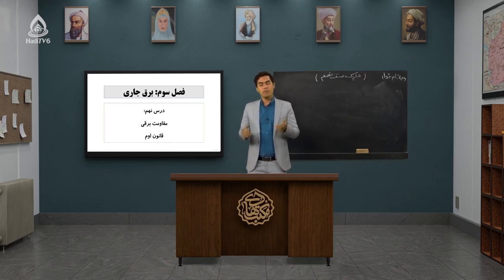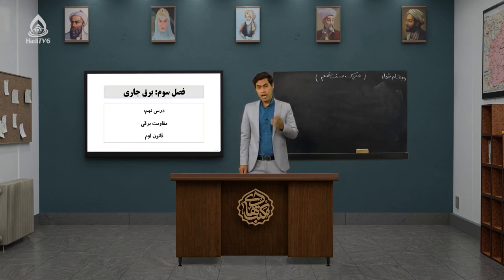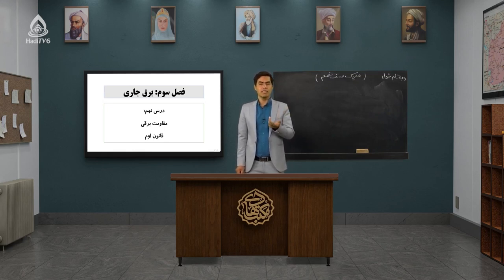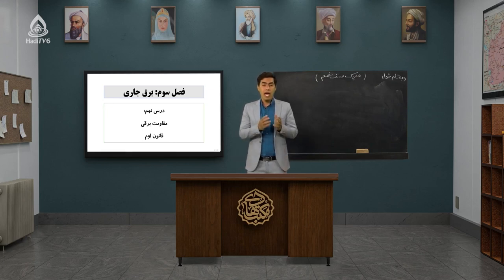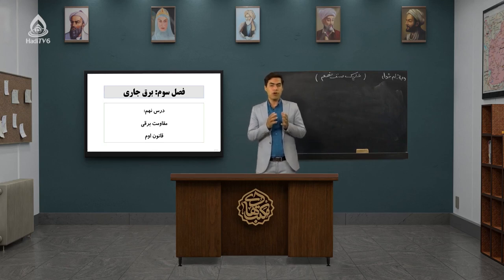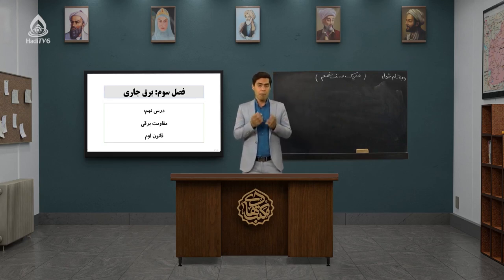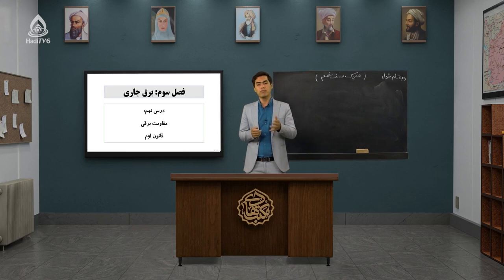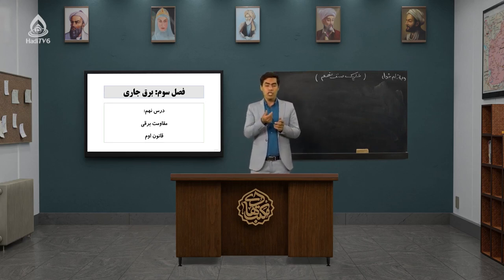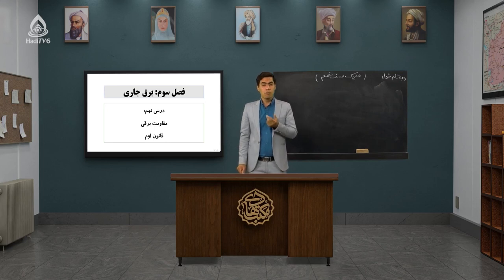در جلسه قبل بیان کردیم که تعریف جریان برقی چی بود؟ به حرکت الکترون‌ها در یک سیم فلزی ما می‌گفتیم که جریان برق. در واقع این حرکت الکترون‌ها بود که باعث ایجاد جریان برق می‌شد. باز آمدیم سراغ مدار، گفتیم که یک مسیر بسته که باعث حرکت الکترون‌ها می‌شه یک مدار هم. مثلاً یک گروپ داریم، مقداری سیم، یک باتری - اینها را که به هم متصل می‌کنیم گروپ روشن می‌شه. این مسیر بسته باعث حرکت الکترون‌ها می‌شه.